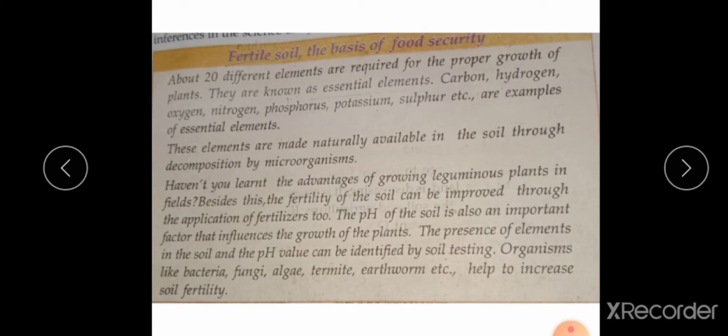These elements are naturally made available in nature through decomposition of microorganisms. In the soil, organic fertilizers like plant and animal waste will be there. When they decompose with the help of microorganisms, these elements mix with the soil and plants get these elements through the water because these elements are soluble in water.